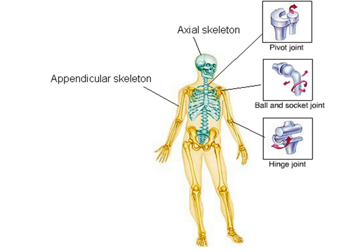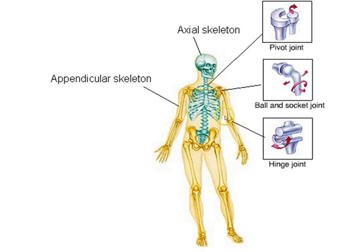The skeleton is divided into two parts: the axial skeleton — just like the central nervous system — covers just the midline structures: the skull, the spinal cord, and the ribs. The appendicular skeleton is any skeletal part not part of the spinal cord, ribcage, or skull. A couple types of joints: pivot joints, like in your neck, rotate in a circle — owls can pivot that joint so the head turns almost completely around. Ball and socket joints are found in our hips and shoulders. We also have hinge joints, found in your elbows and knees, which work like the hinge of a door.